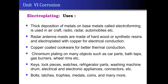Let us see the uses of electroplating. Aircraft parts, radio parts, radar parts, and automobile parts — where thick deposition is done on the base metal — are one use. Radar antenna masts, which are basically wood or resin material, are coated with copper for electrical conduction and transmission. Copper-coated cookware, called copper-bottomed cookware, is used to save fuel by increasing thermal conduction. Chromium plating is used on car parts, bath taps, gas burners, and wheel rims to increase the life of steel.